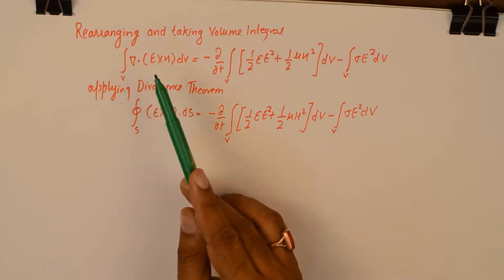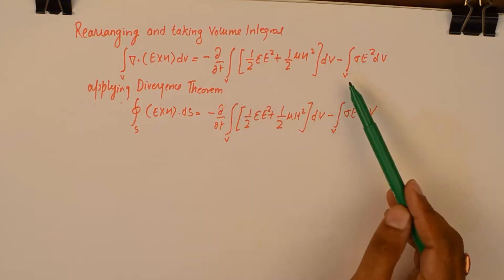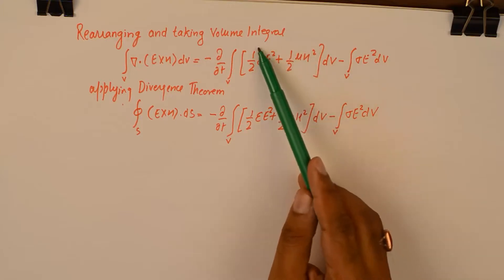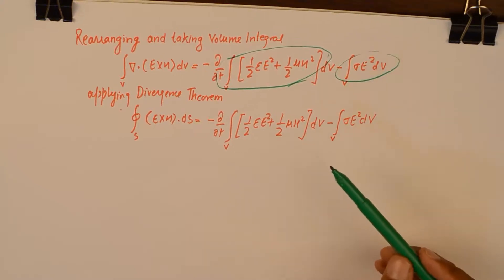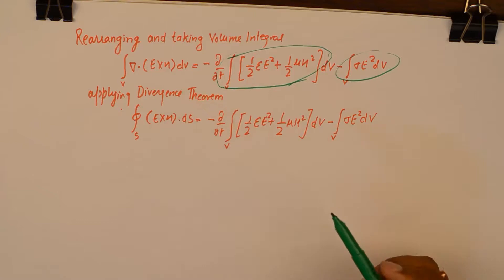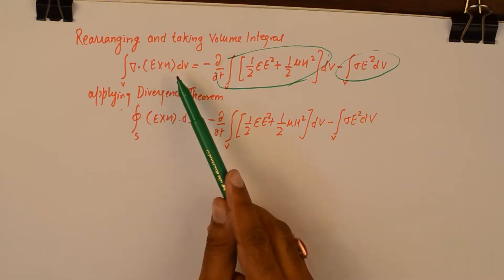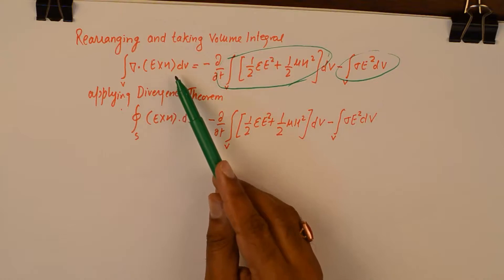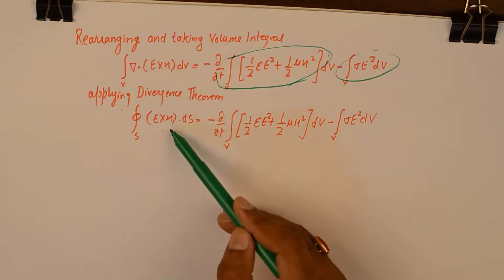This volume integral has been taken on the equation we just saw, and on the right hand side we have also taken the volume integral. The terms are divided into two parts — one part is this and the other part is this — and we will talk about their interpretation. The final step is to apply the divergence theorem only on the left hand side, because we want to see E cross H vector within the integral sign. Taking the divergence theorem, this divergence goes away but it is now being taken over the surface integral.